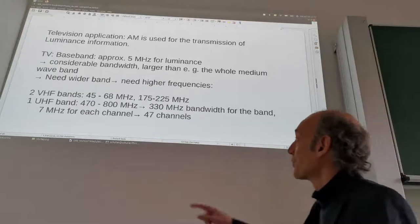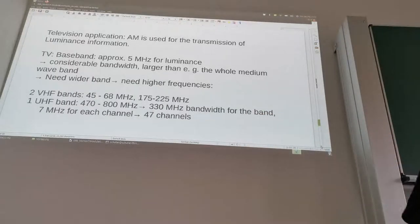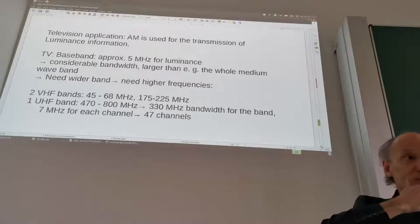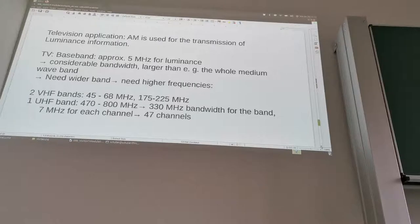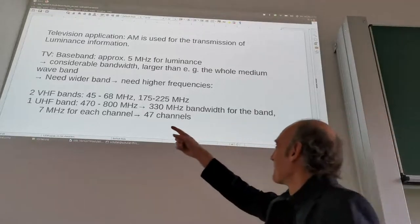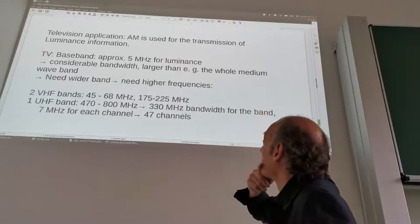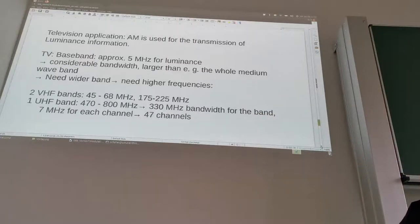For TV we first used VHF bands. Then in the 1960s, when the technology was available for UHF and receivers were sufficiently cheap for consumer electronics, the much wider UHF band came into use. The UHF band has 330 MHz of bandwidth for the entire band, and what's actually used is 7 MHz per channel, which means we get 47 channels. This is why the UHF band is basically what's used today — all the stations transmitting analog and now mostly digital are transmitting on this band. It also means small antennas because the wavelength is much shorter.